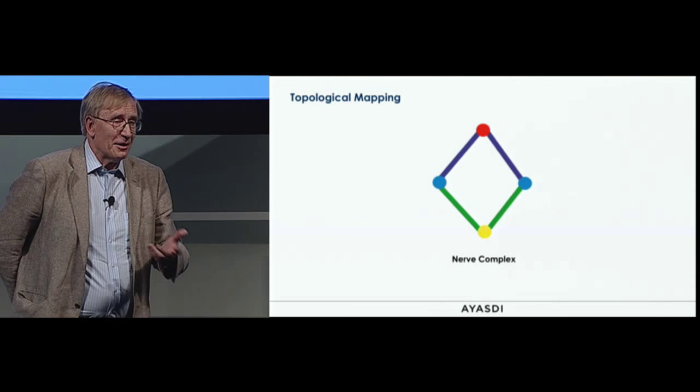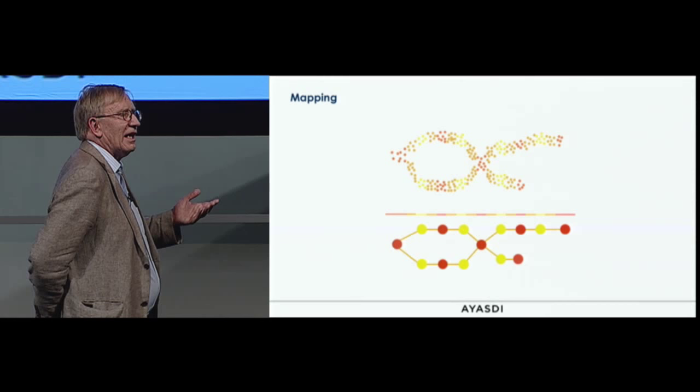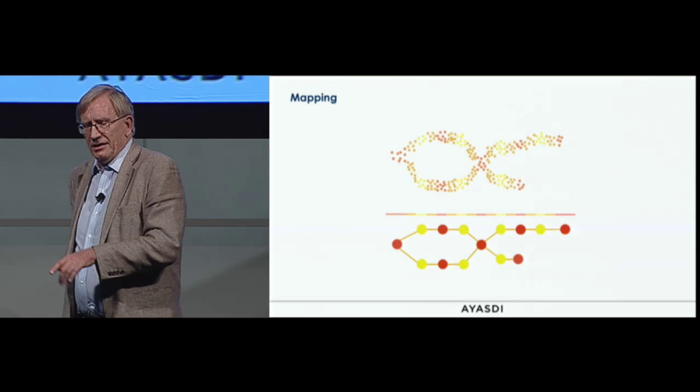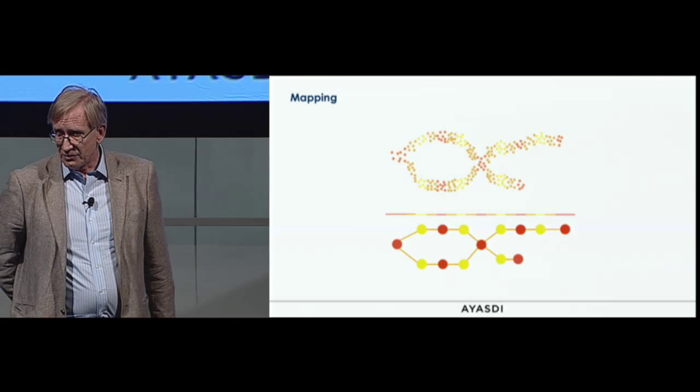It doesn't always work quite as beautifully, but it usually captures something about the geometric object. We're going to try to do this for point clouds. The picture for this looks like the complicated point cloud covered by bins — red and yellow alternating — coming from a projection down onto a real line. I'll perform a clustering step instead of a connected component step inside each of those bins.